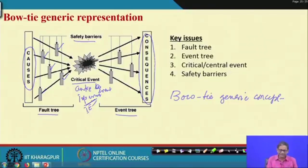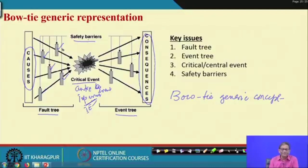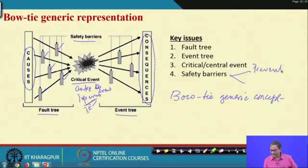Even whatever the level of preventive barriers you put, there will be a chance of the top event occurring. Your system must also be protected from the impact of such events - that is what the event tree discusses. Barriers on the event tree side can minimize consequences. In safety engineering terminology, these are mitigative barriers or recovery barriers, while those on the fault tree side are preventive barriers.